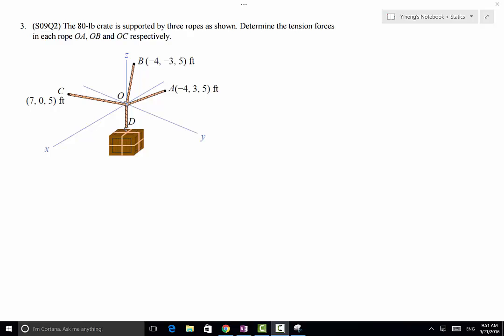In this problem, we have an 80-pound crate supported by a ring at point O, and the ring is connected to three cables: OA, OB, and OC.